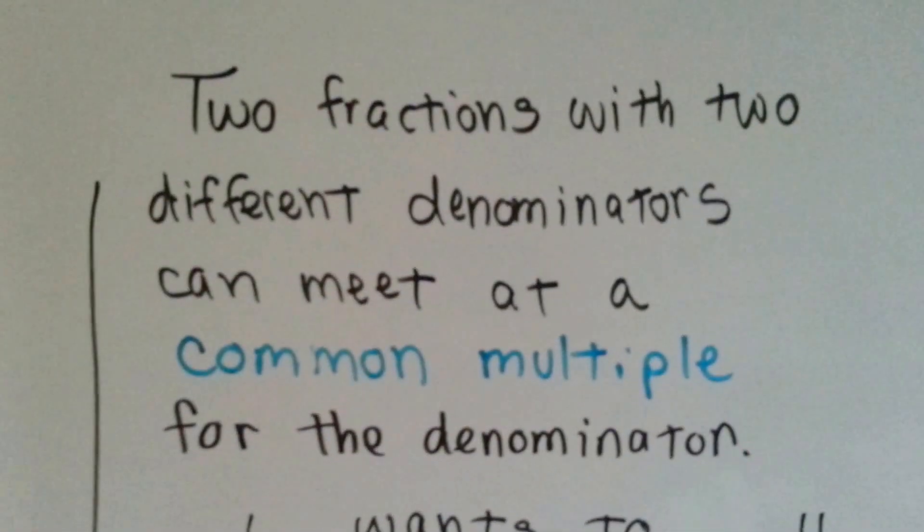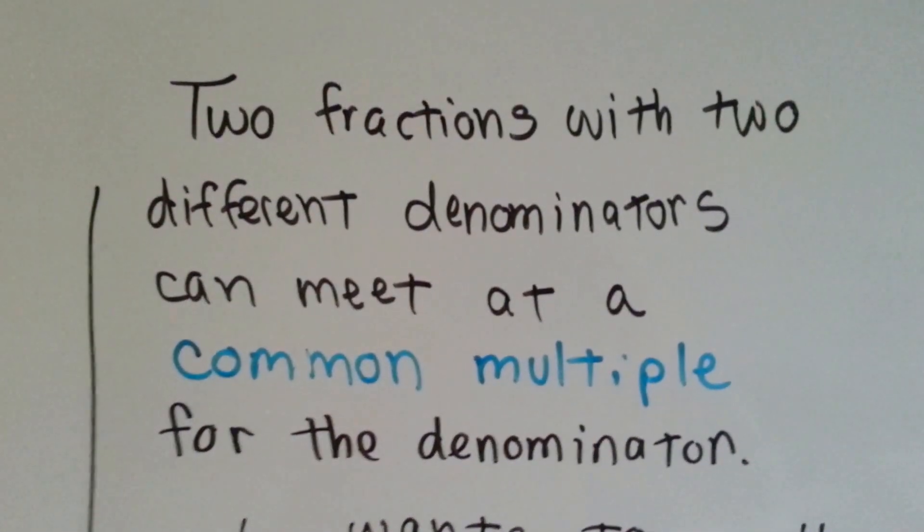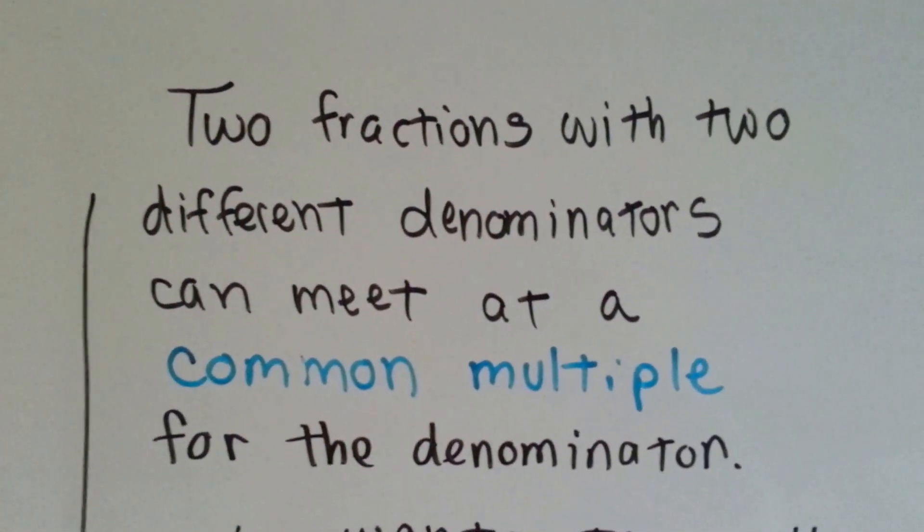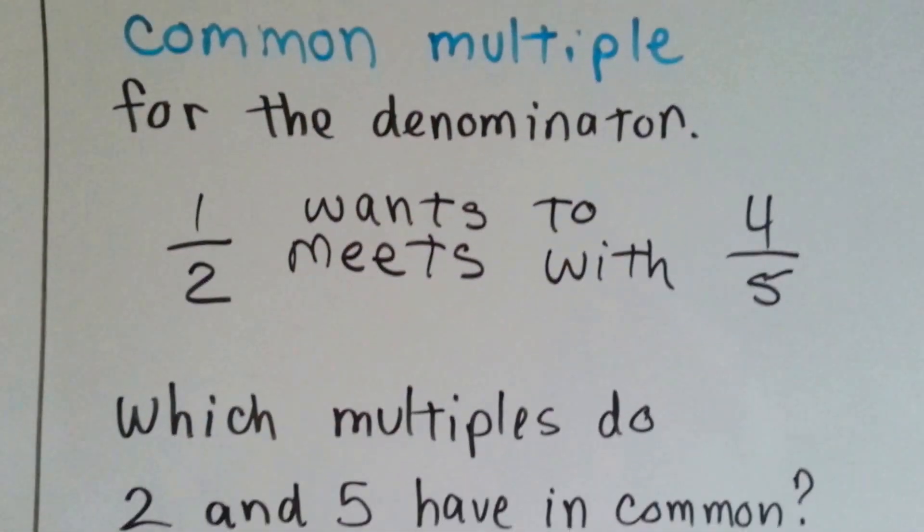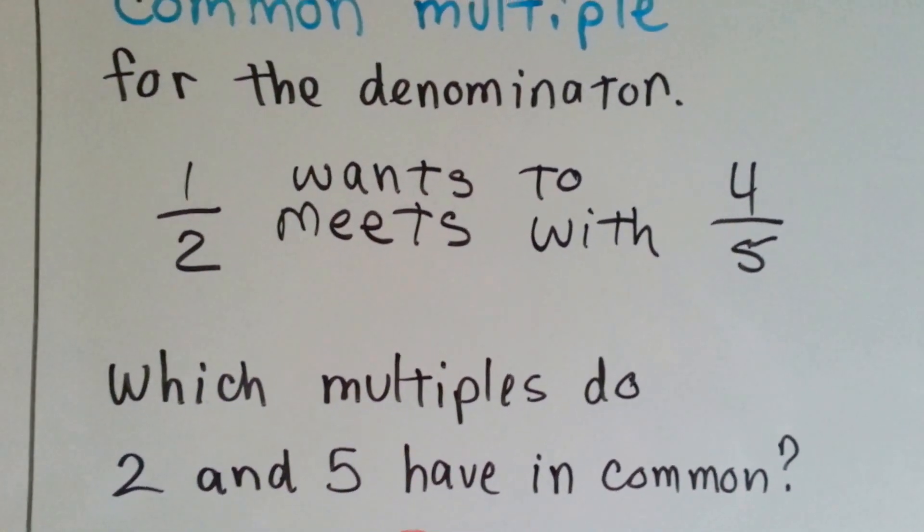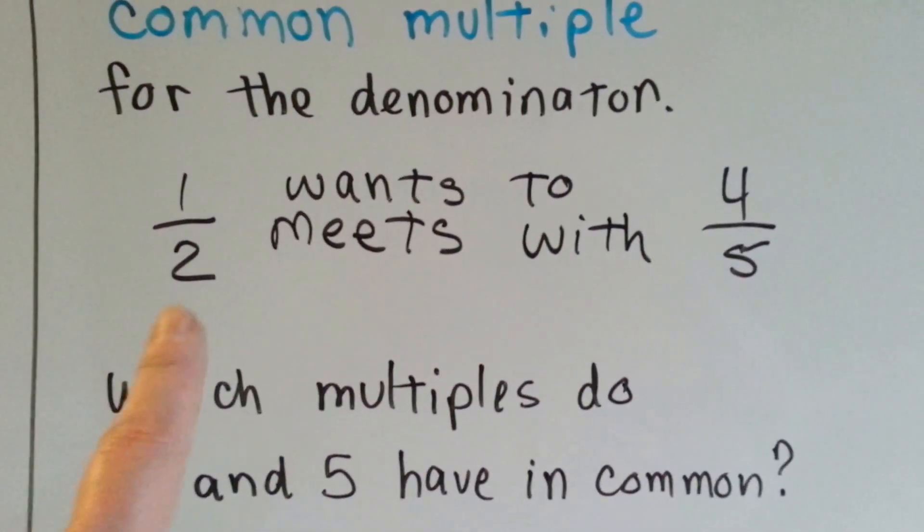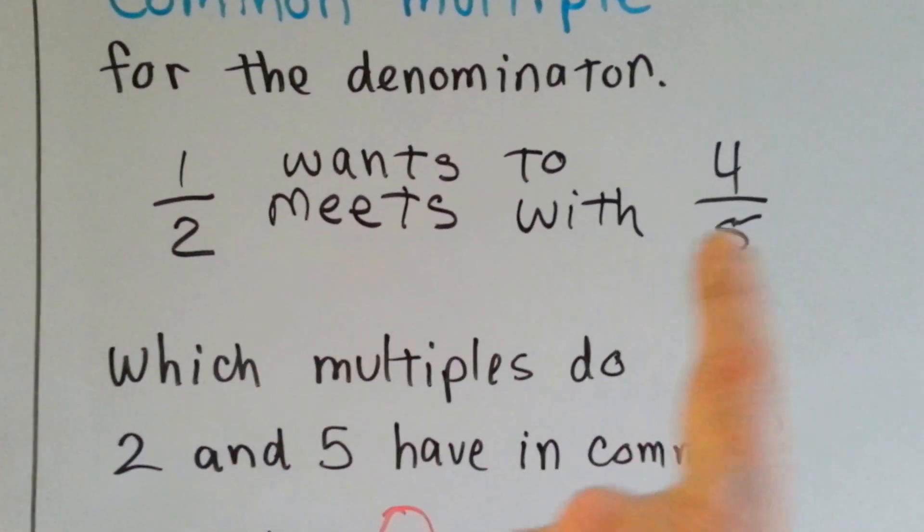Two fractions with two different denominators can meet at a common multiple for the denominator. If a half wants to meet with 4 fifths, which multiples do 2 and 5 have in common? We look at the denominators.